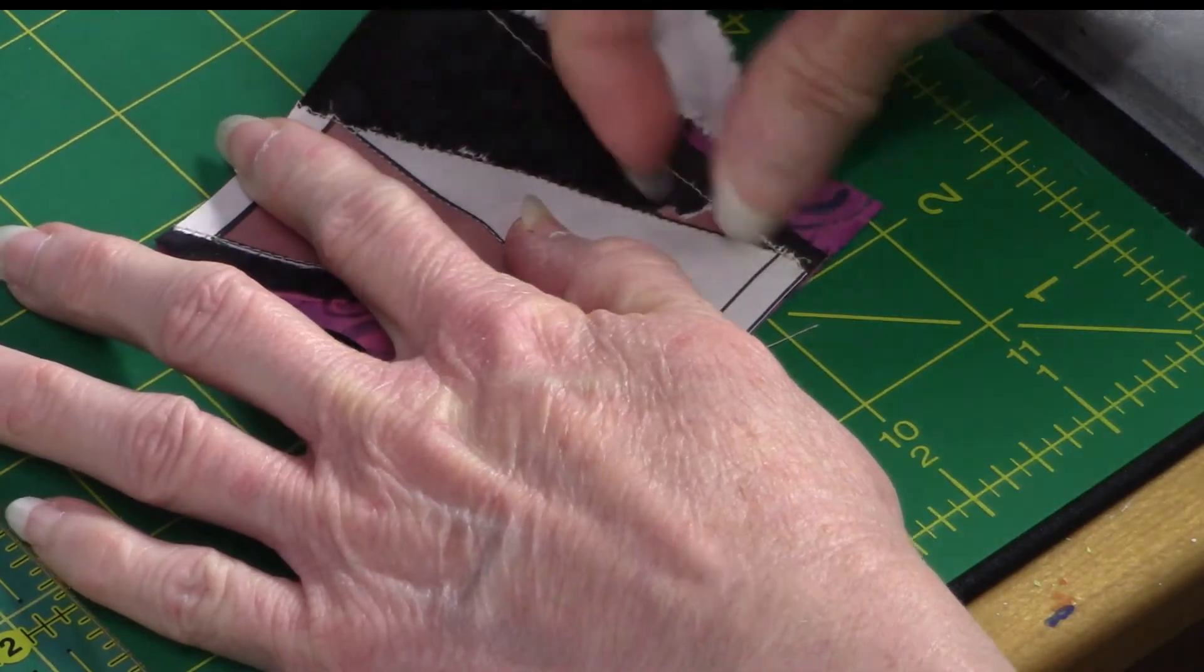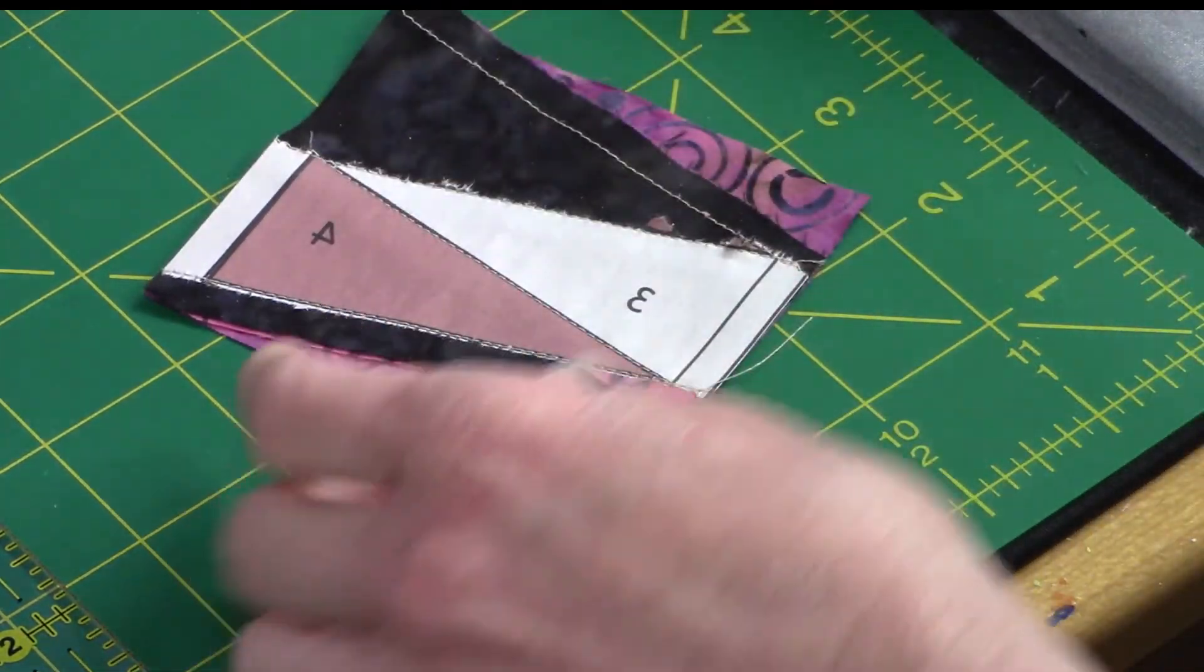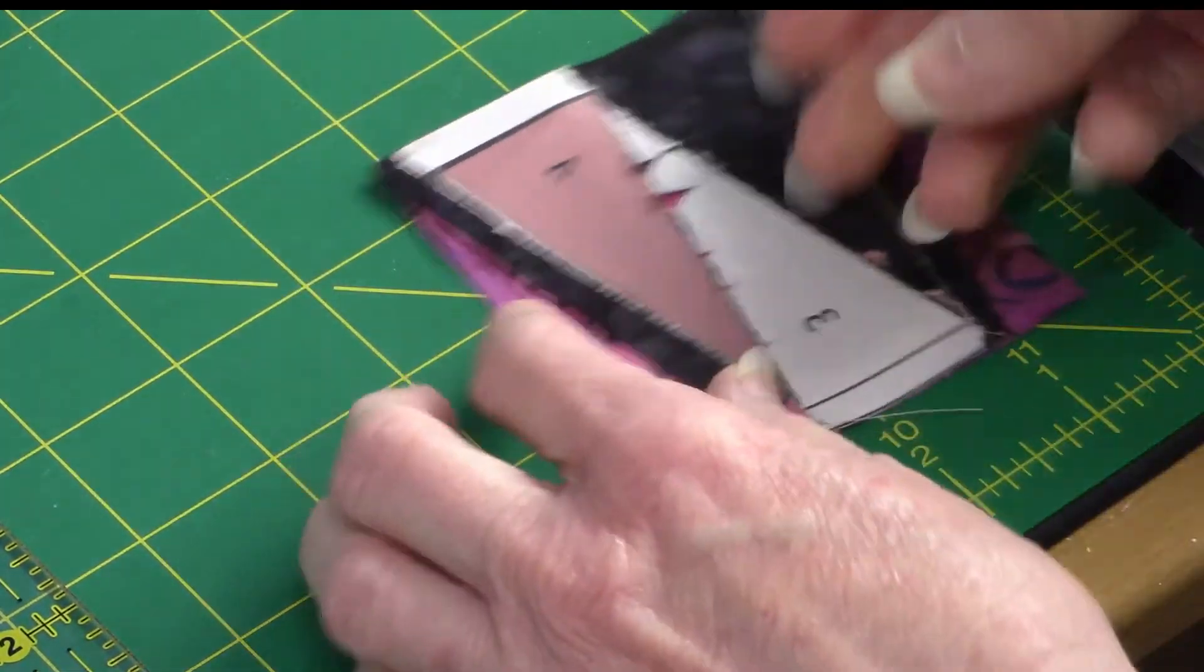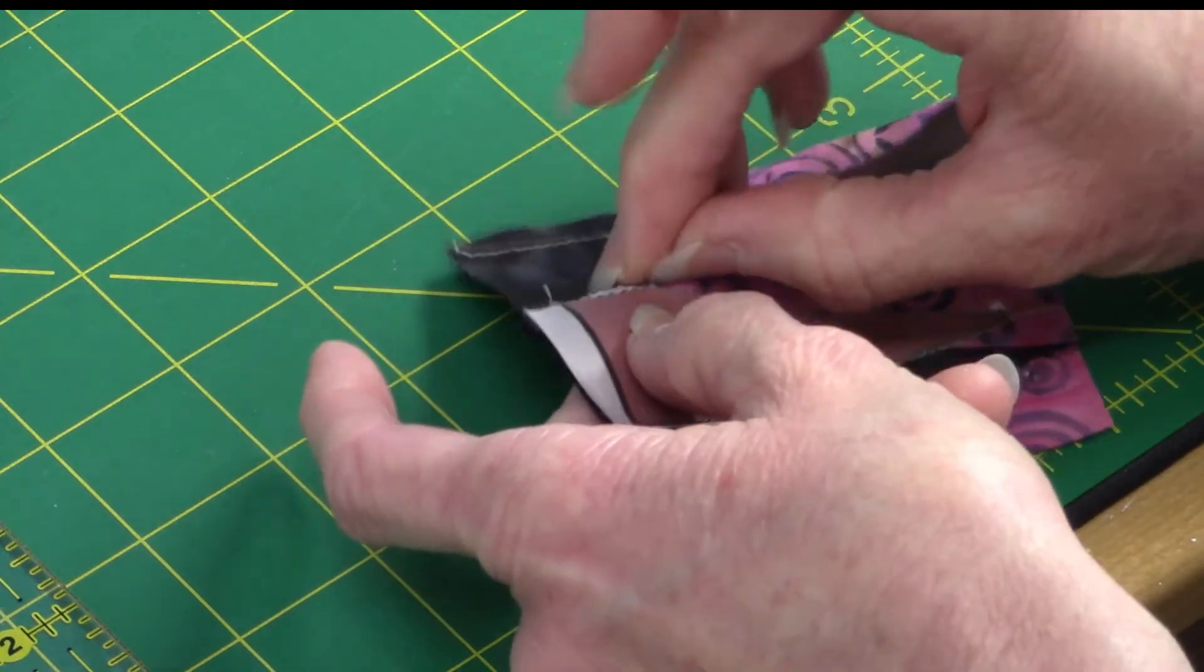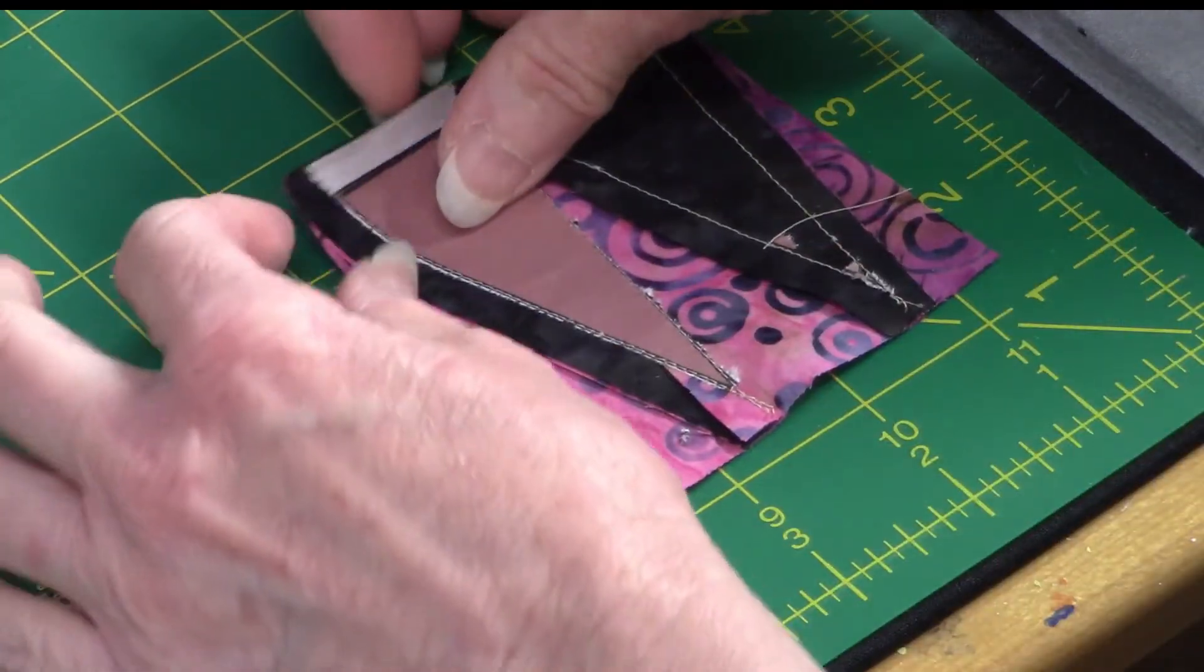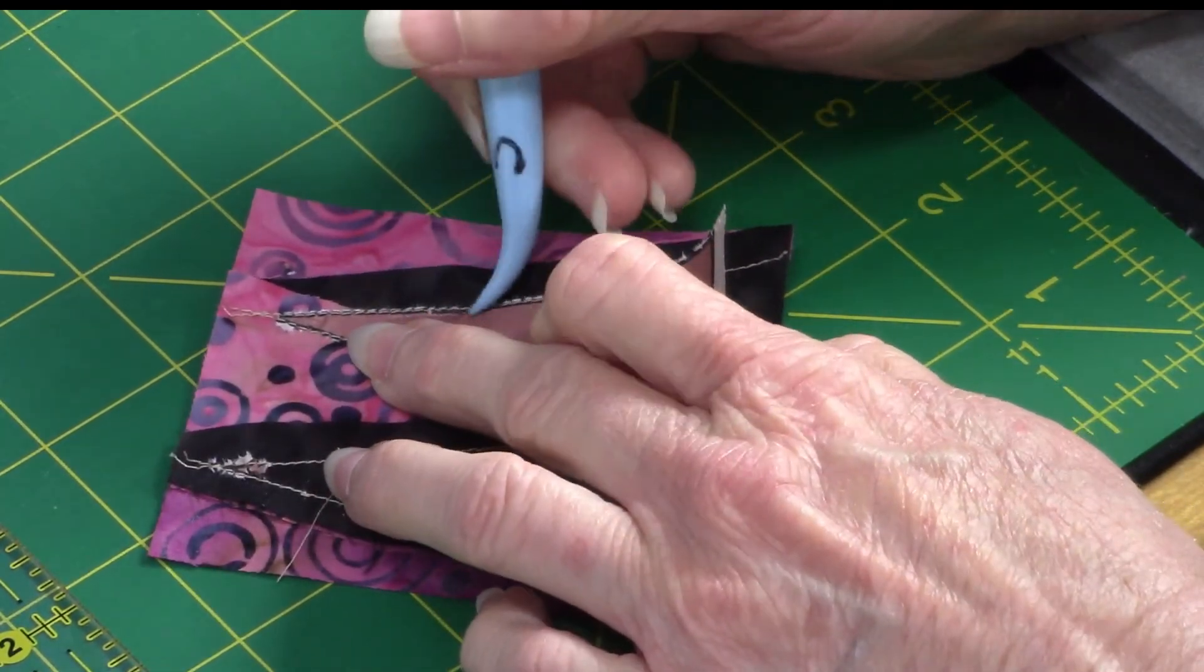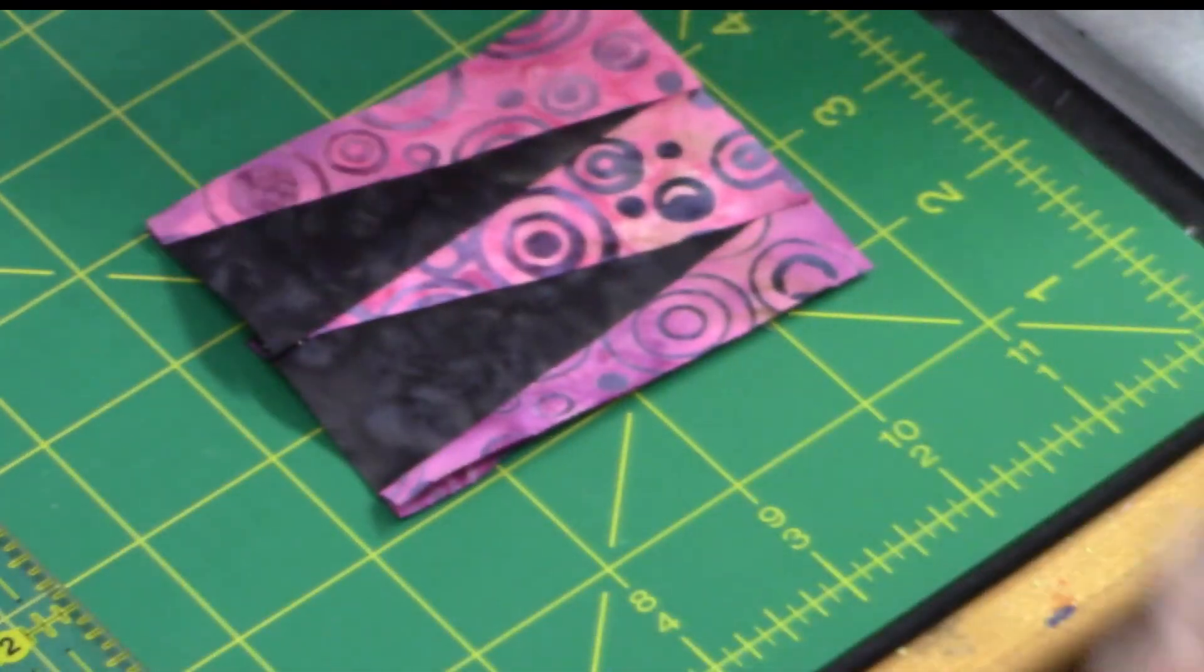You could use a seam ripper but you want to be very careful not to rip your fabric. This one I like because I can actually put the little point in there and take out. I'll usually run it to the back side. And also one thing to keep in mind when you're paper piecing is don't pull hard on the edges, because those aren't straight of grain anymore. You've cut them at all these different biases, so it will stretch. So don't be too abusive on that edge, be gentle. There you go. Now you're ready to put that in your quilt.